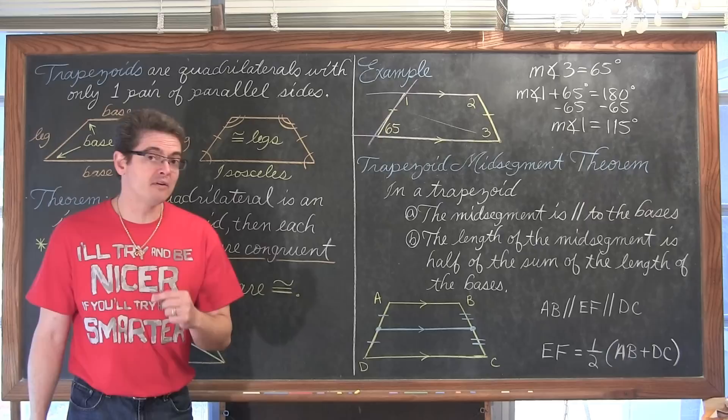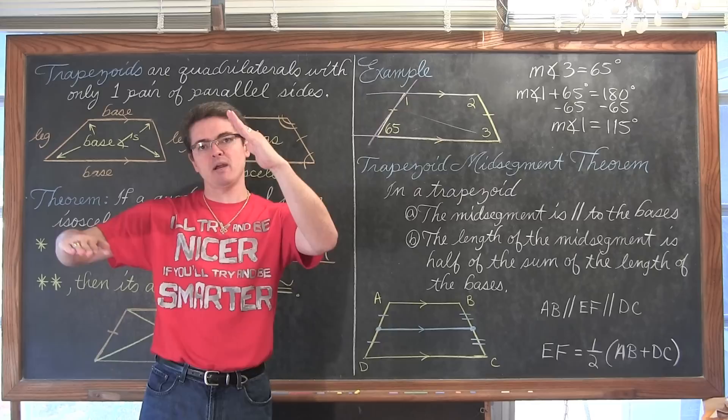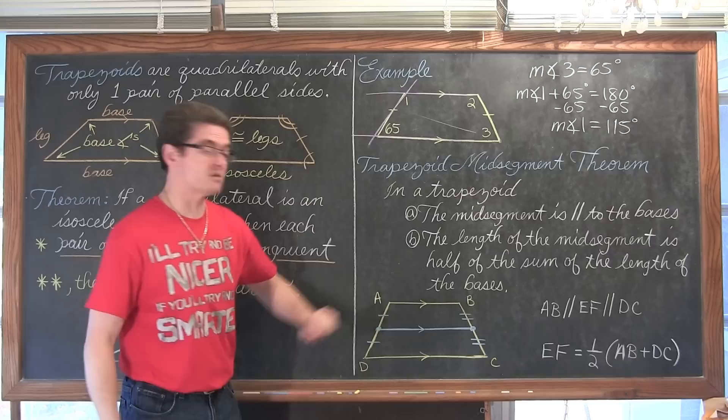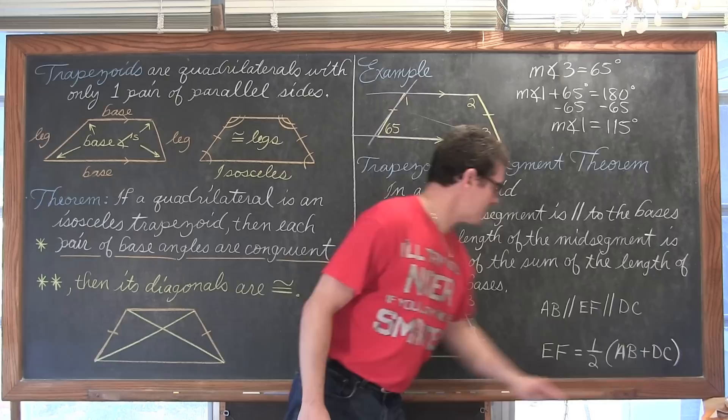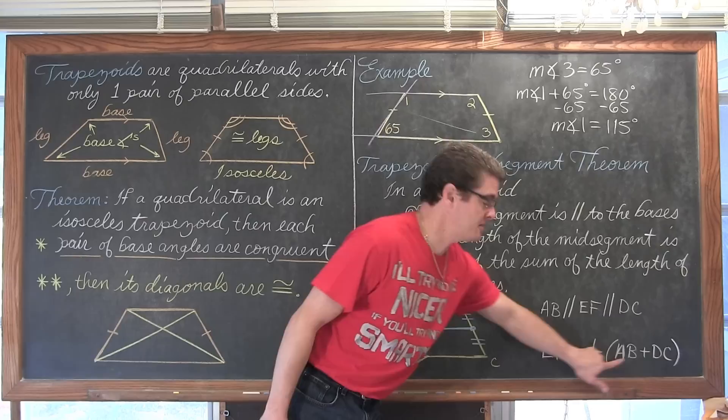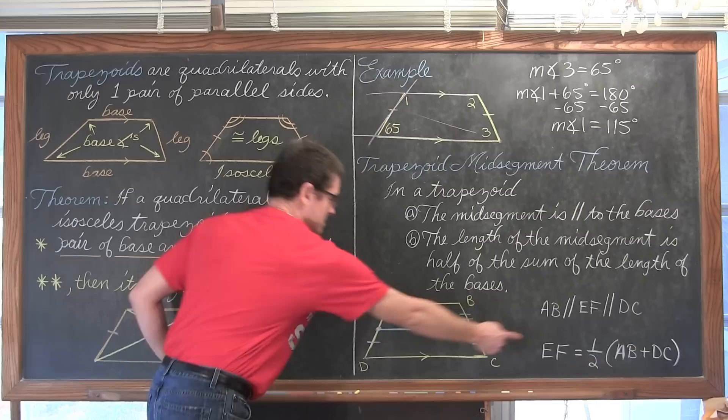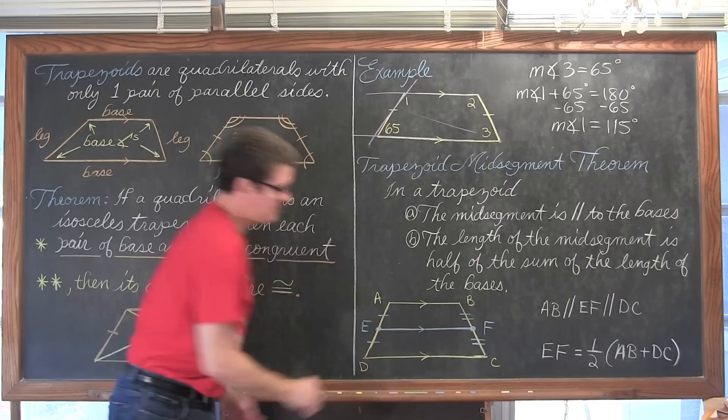The length of the mid-segment is equal to half of the sum of the lengths of the bases. In a triangle we had one parallel side so the mid-segment was half of that length. Here we have two bases, so we add them up: the length of AB plus the length of DC, take that sum and divide it by two, and you get the length of the mid-segment EF.